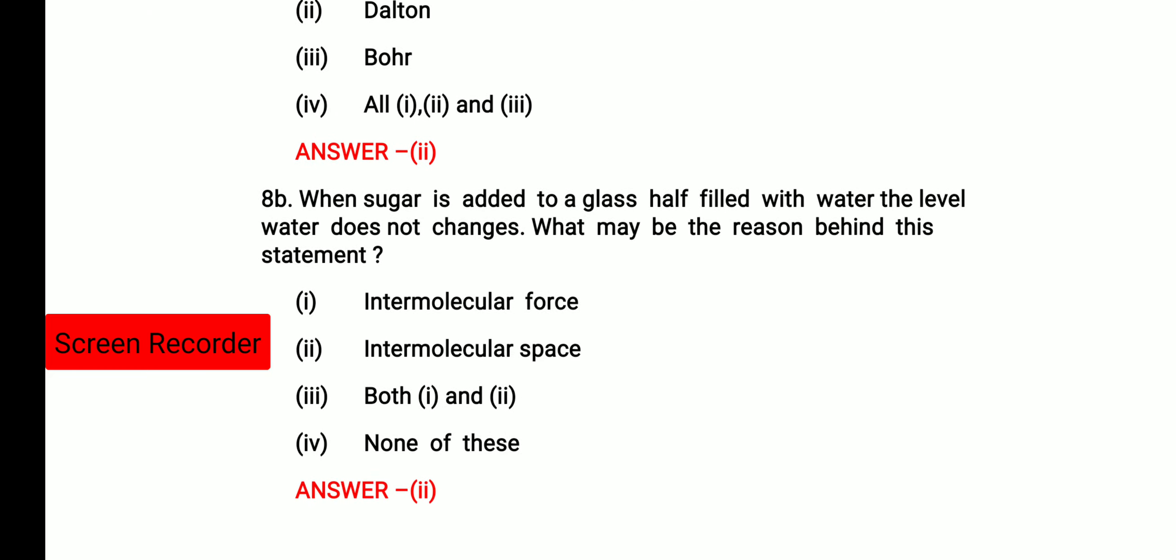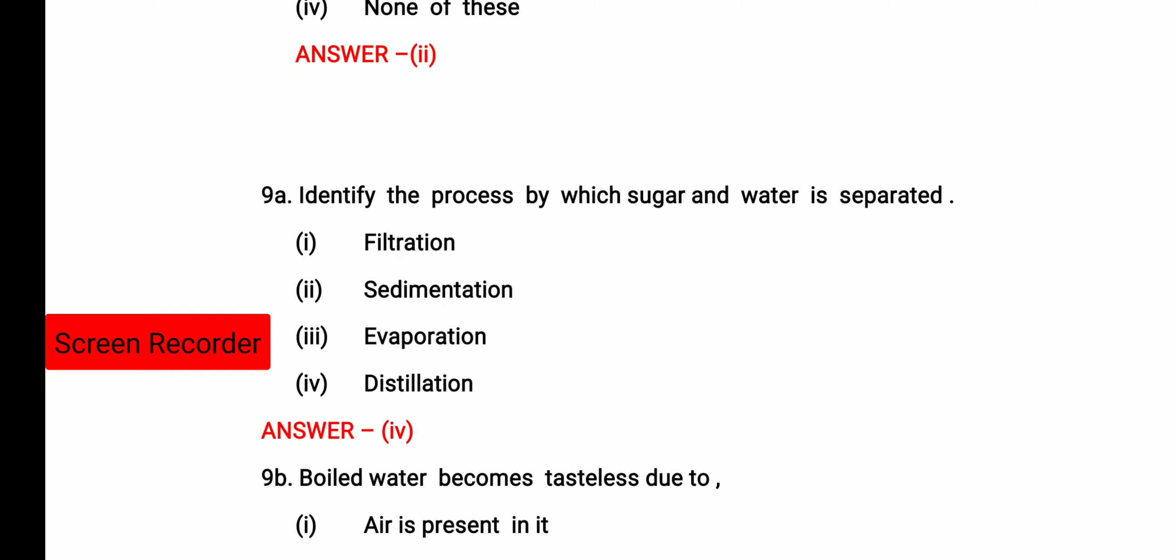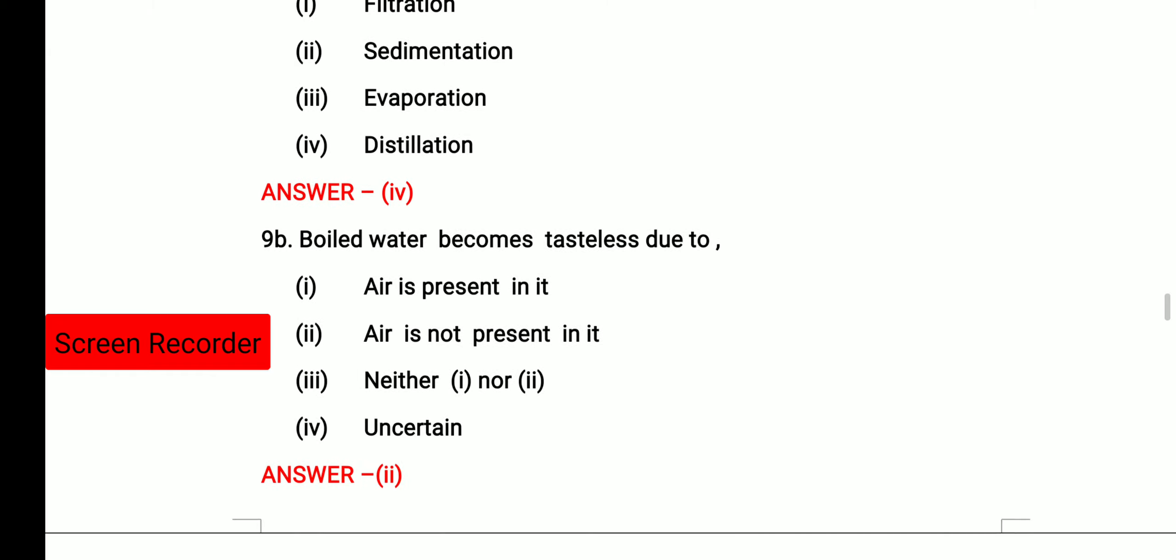Next question, when sugar is added to a glass, half filled with water, level of water does not change. What may be the reason behind this statement? The reason is the intermolecular space because the sugar molecules will get space in the intermolecular space of the water. Then the next question, identify the process by which sugar and water is separated. It means the sugar should also be obtained, water should also be obtained. So option 4 is correct. By distillation, we get both the components after the separation.